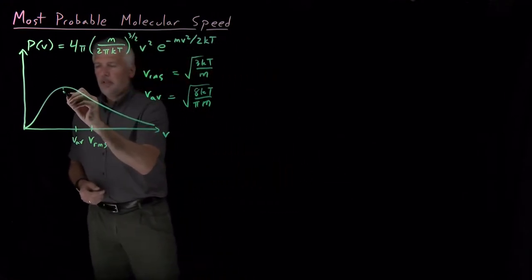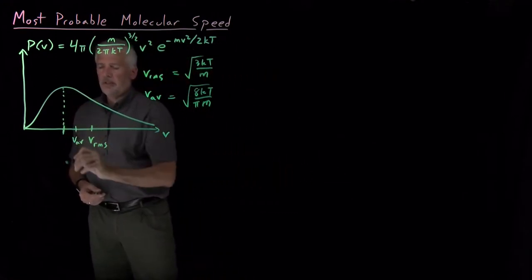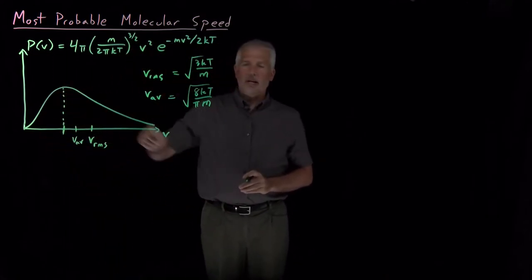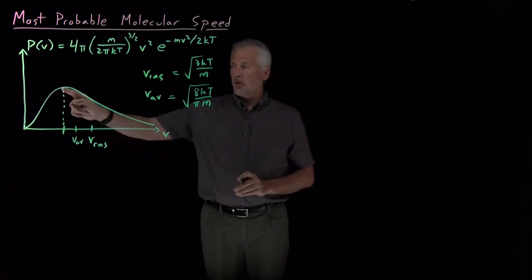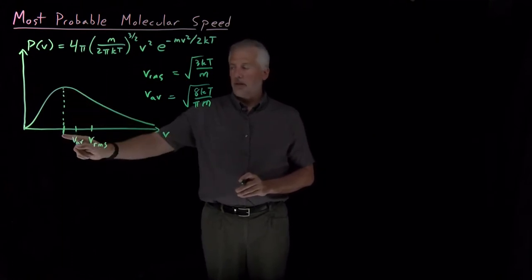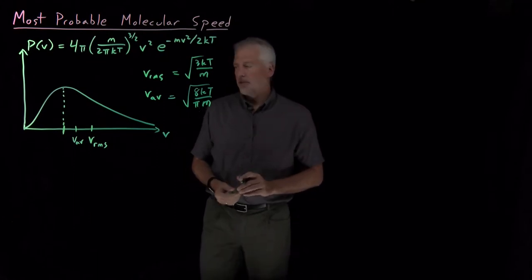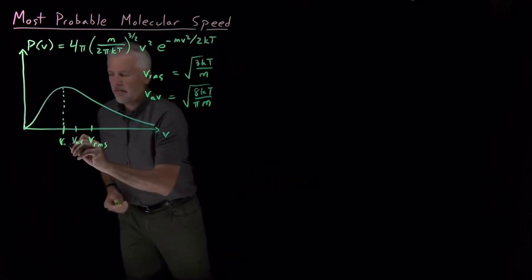But it's an interesting question to ask ourselves: what is this peak value? What is the value that has the highest probability? In other words, what's the most probable velocity? What's the single velocity that has the highest chance of representing one of the molecules in a gas? We'll call that V_MP for most probable.